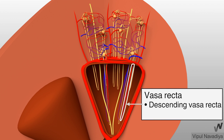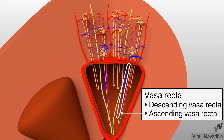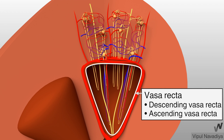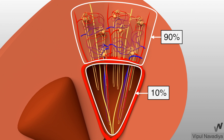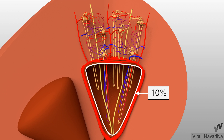The portion going deeper is called the descending vasa recta, and the portion coming out is called the ascending vasa recta. It supplies the portion of tubules that lie in the medulla. Out of total blood coming into the kidney, about 90% perfuses cortical nephrons and the cortex, and only 10% perfuses juxtamedullary nephrons and the medulla. This low blood supply to the medulla helps in maintaining medullary hyperosmolarity.